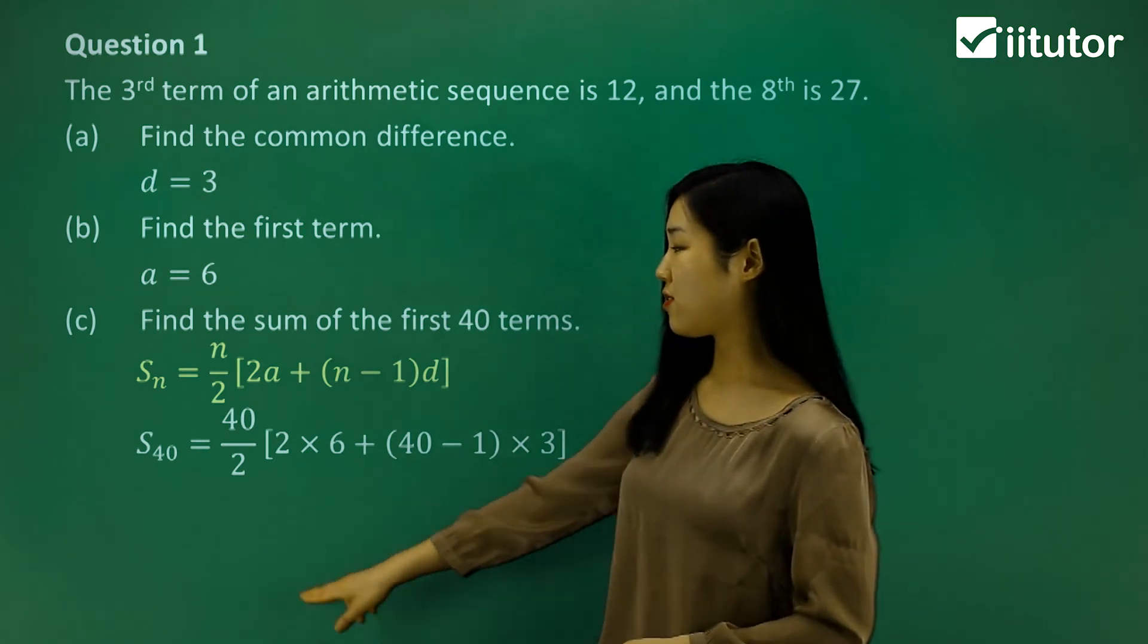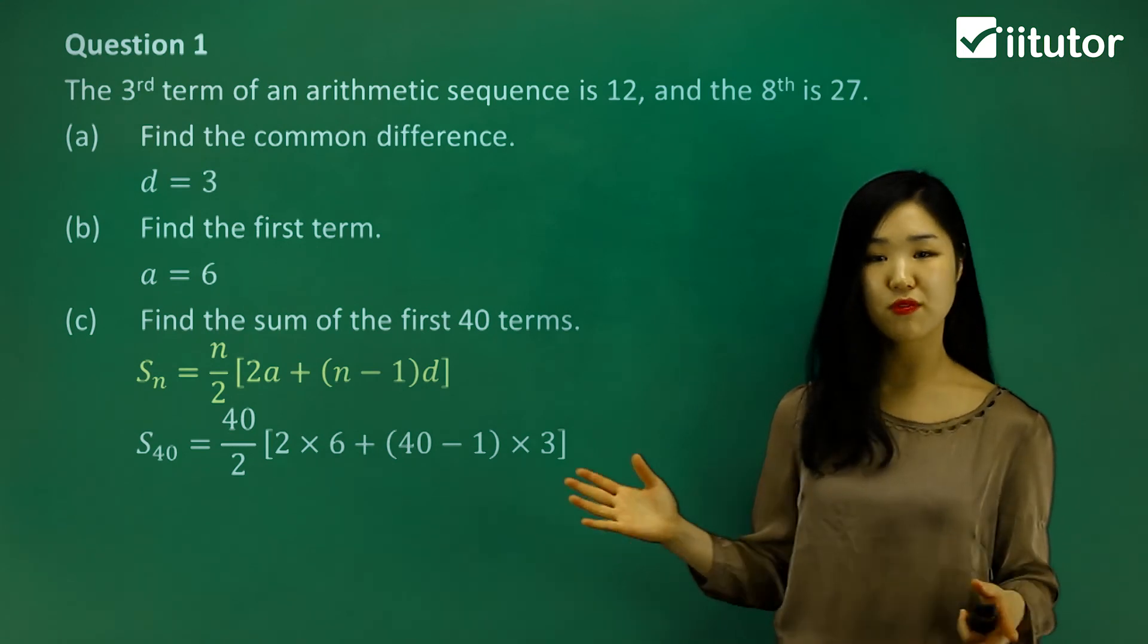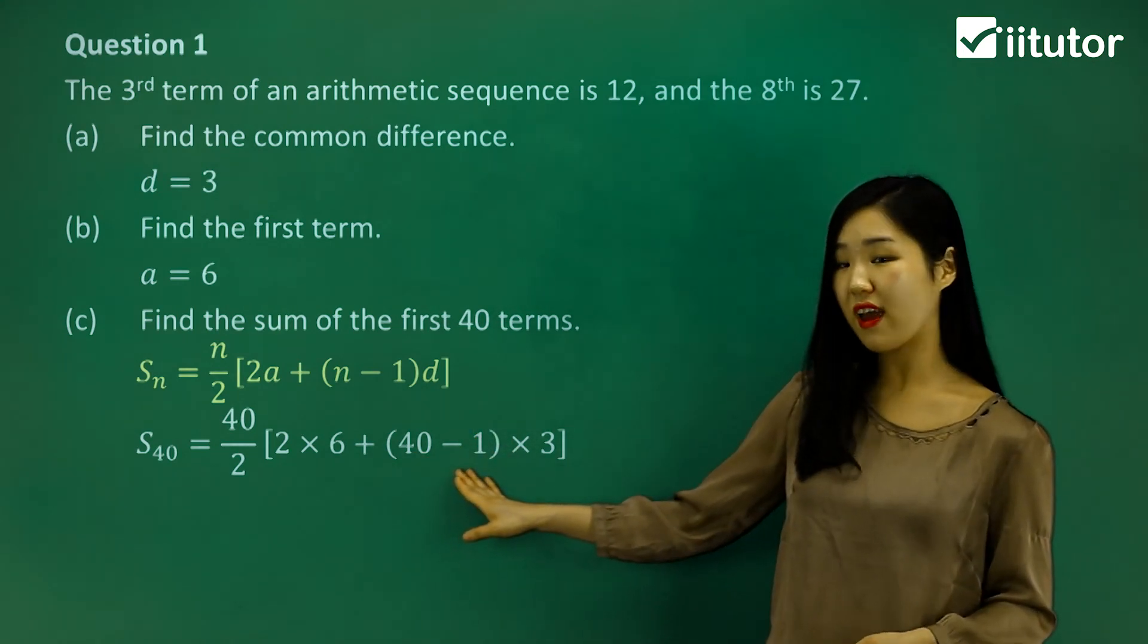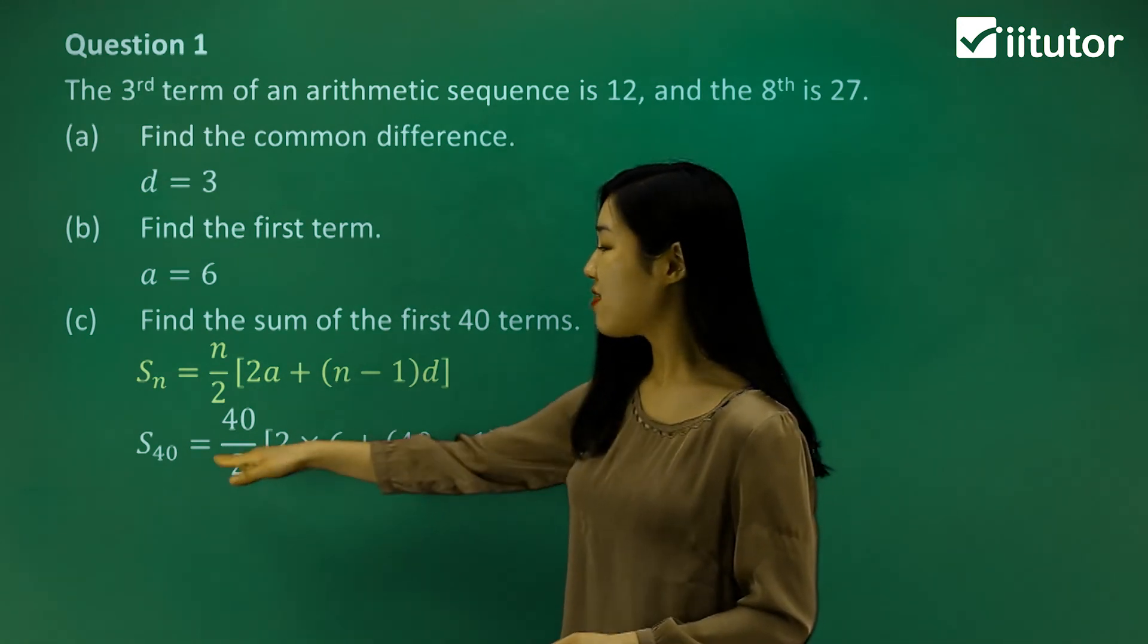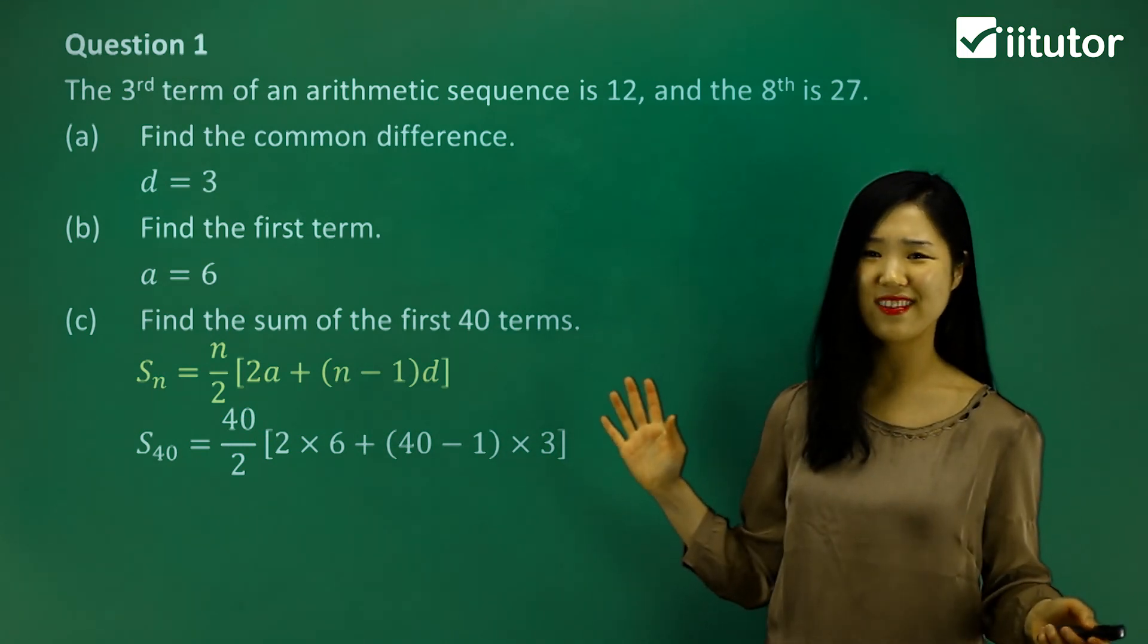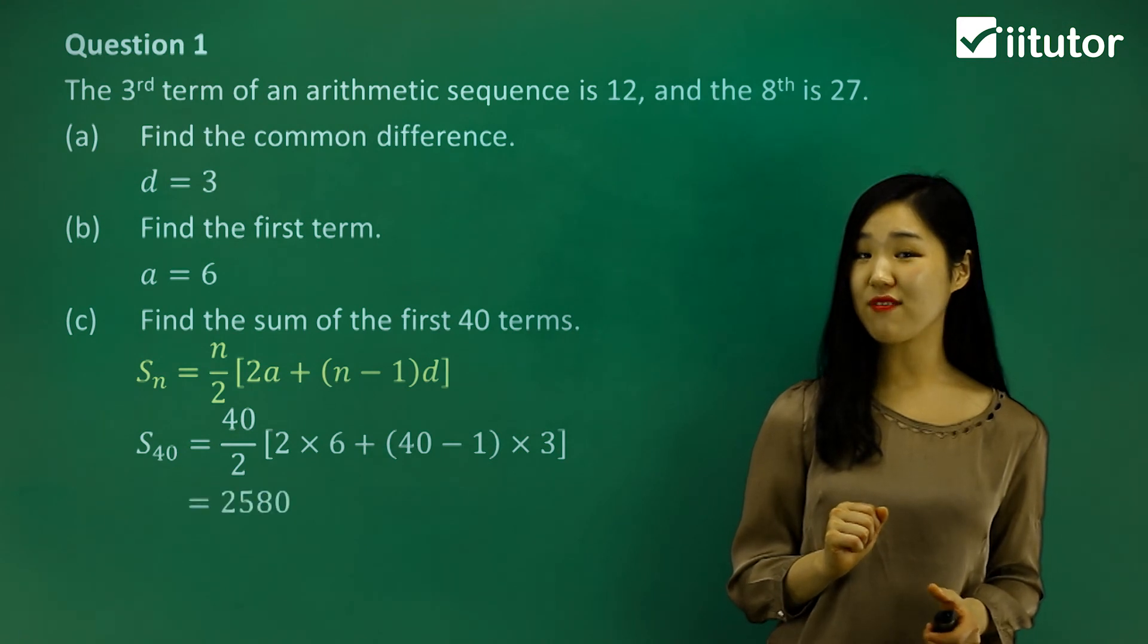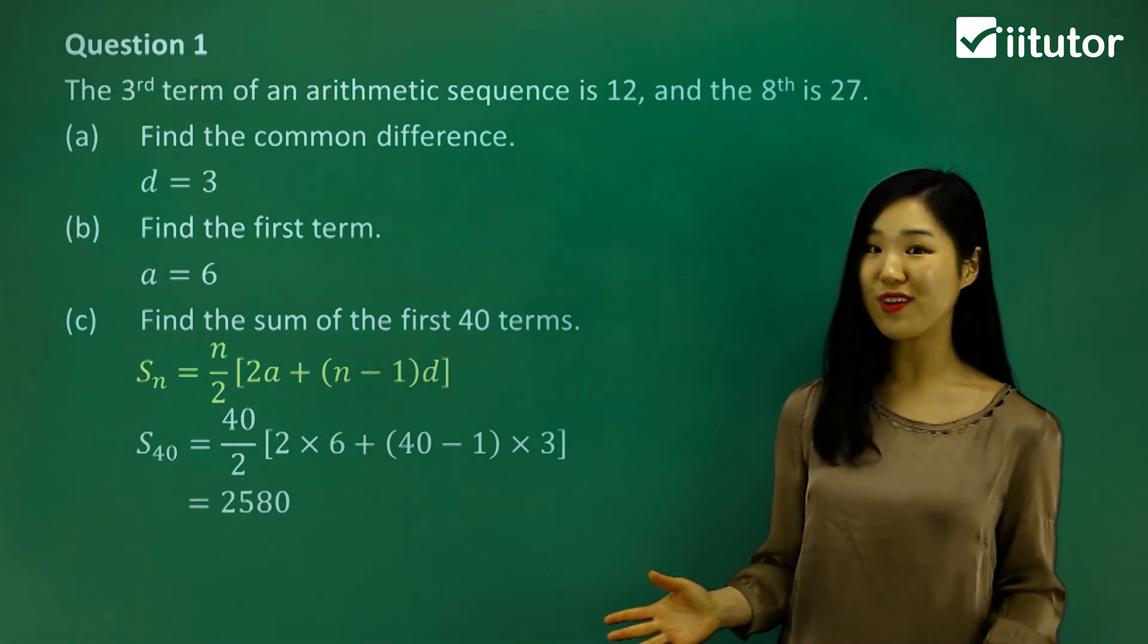See how to replace the n's with 40? a is 6, d is 3. Simplify everything. Make sure you do the brackets first. 40 minus 1, which is 39. Multiply that by 3, then add it to 2 times 6, and then multiply by 40 over 2, which is 20, and then just multiply it all out. You'll get a value of 2580. That's the sum of the first 40 terms.